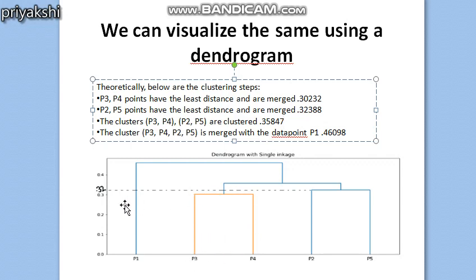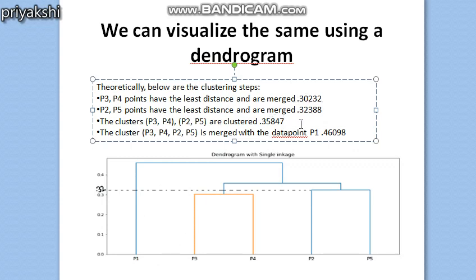In the dendrogram, p3 and p4 merge at 0.32, p2 and p5 merge at 0.32388, then {p3,p4} and {p2,p5} merge at 0.35388, and p1 merges with the combined cluster at 0.46098 to form a single cluster. Notice that in single-link hierarchical clustering the merge values are always in increasing order. This is how you obtain the dendrogram, going from single clusters up to one cluster at each level.